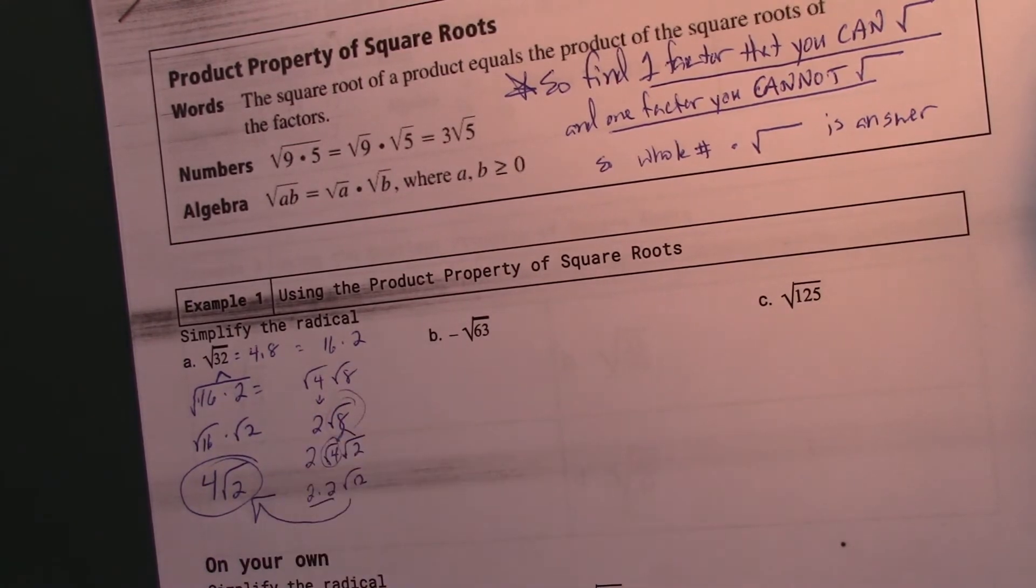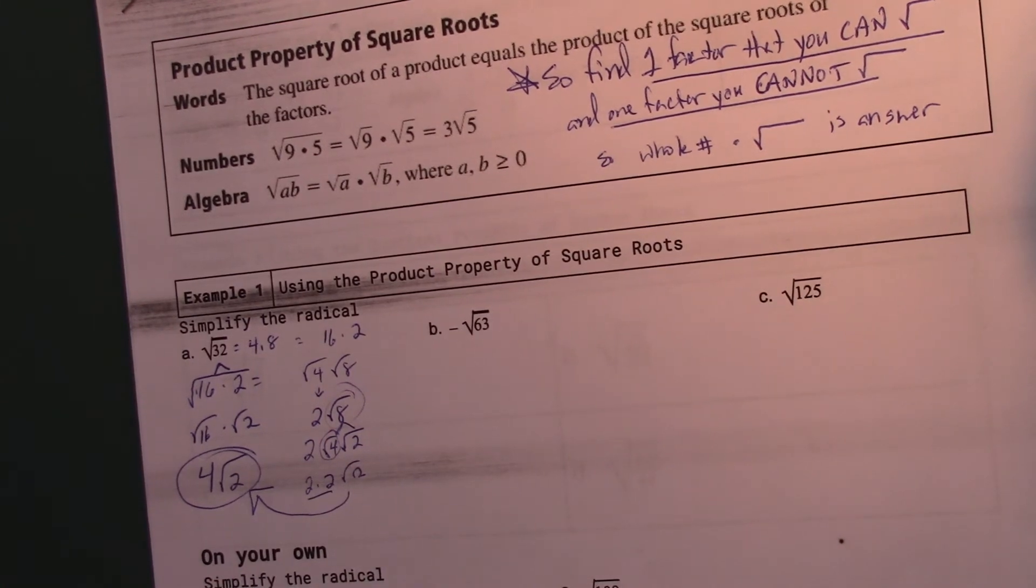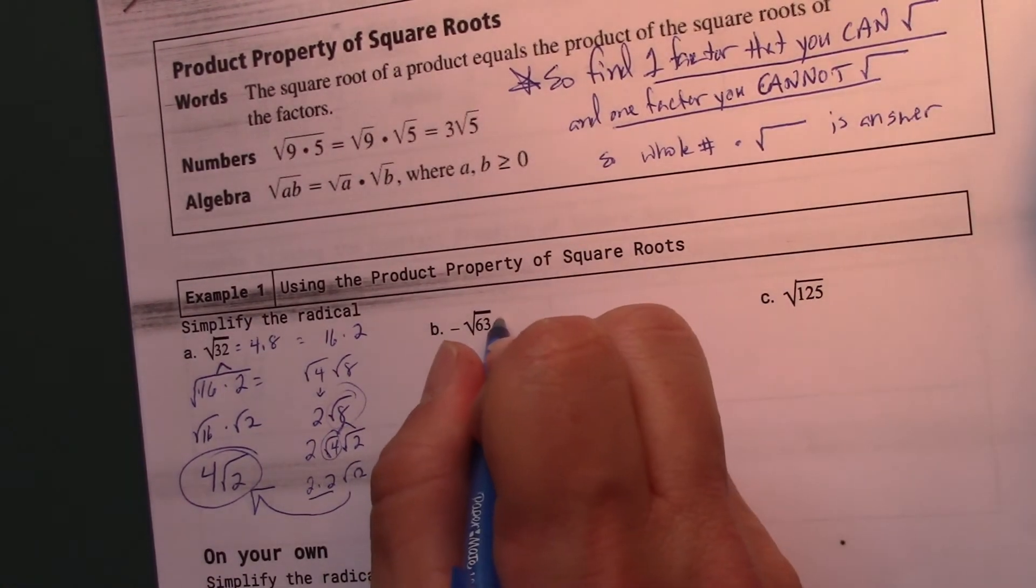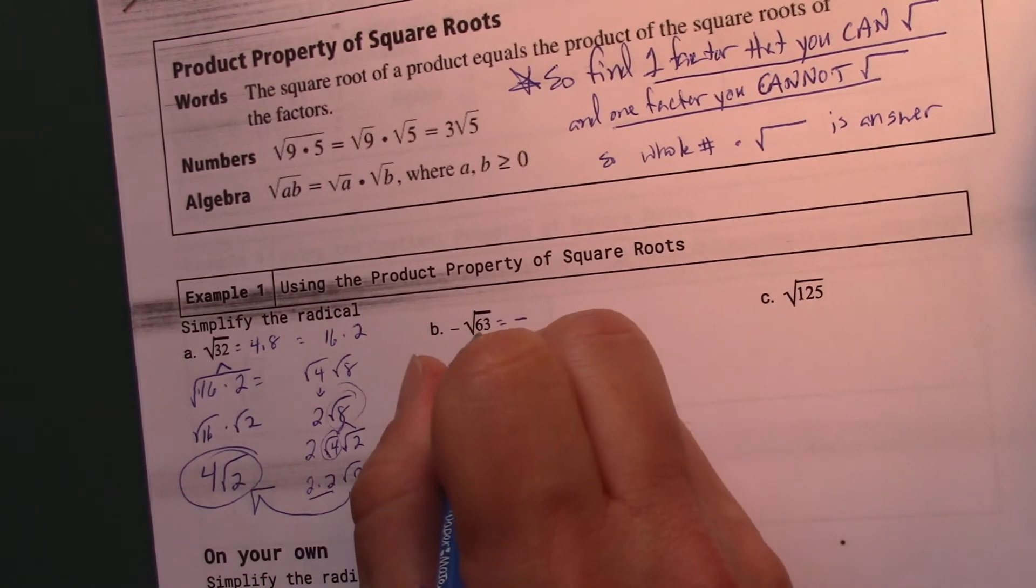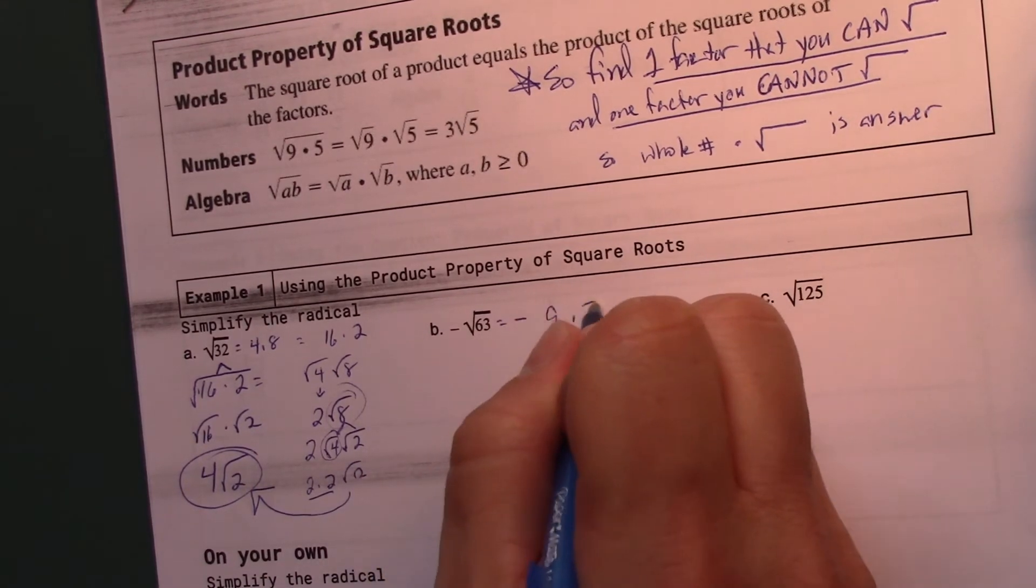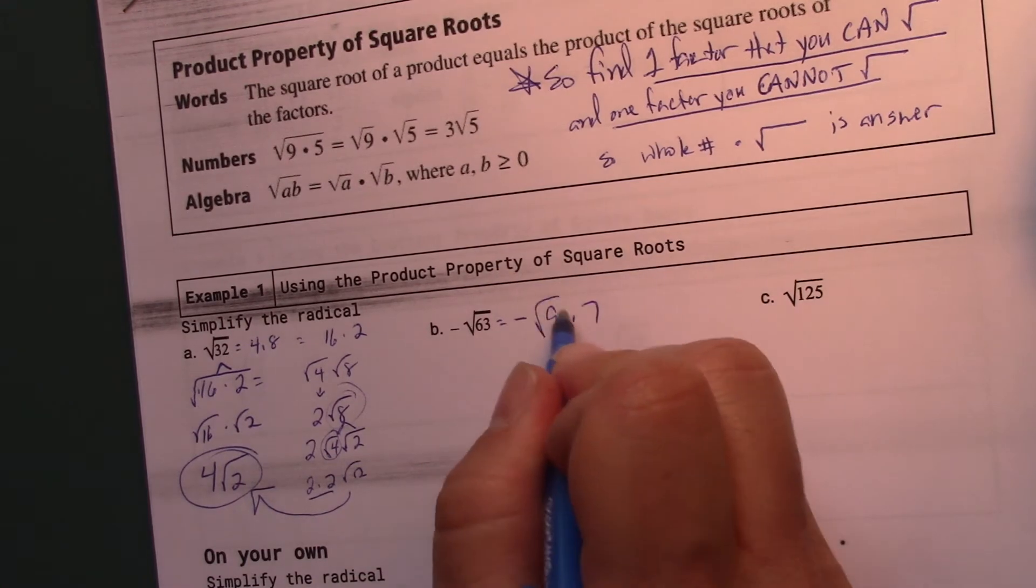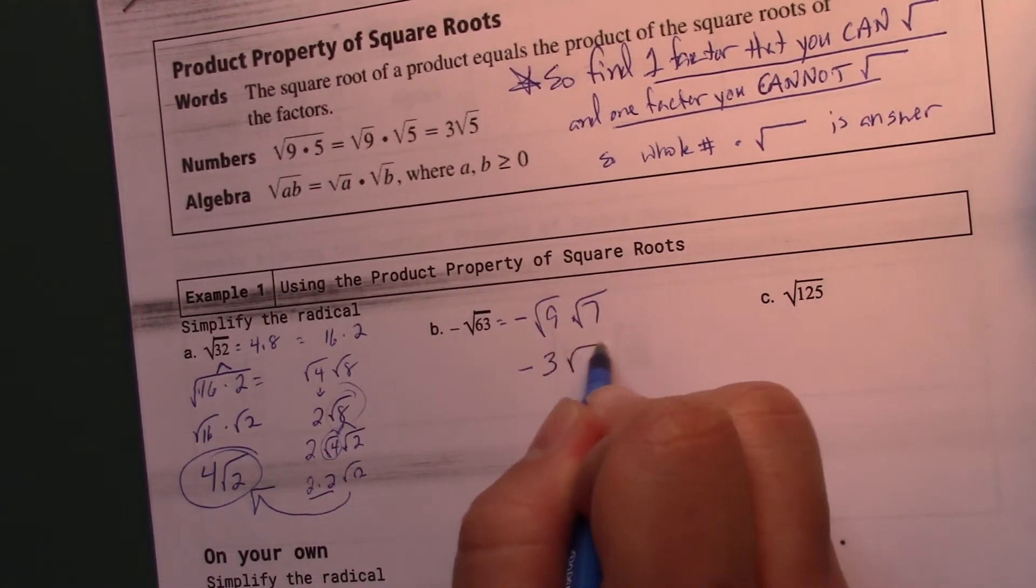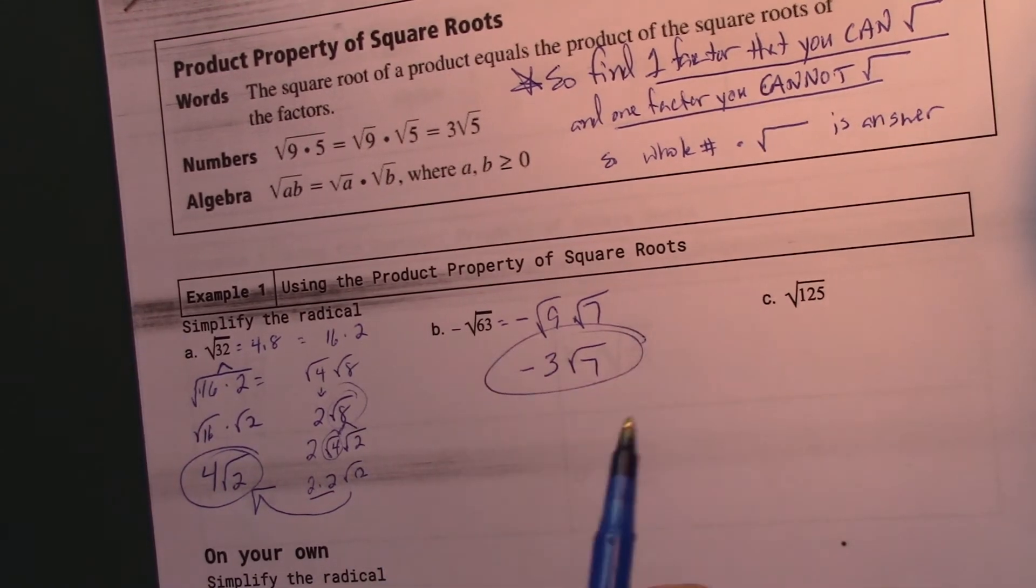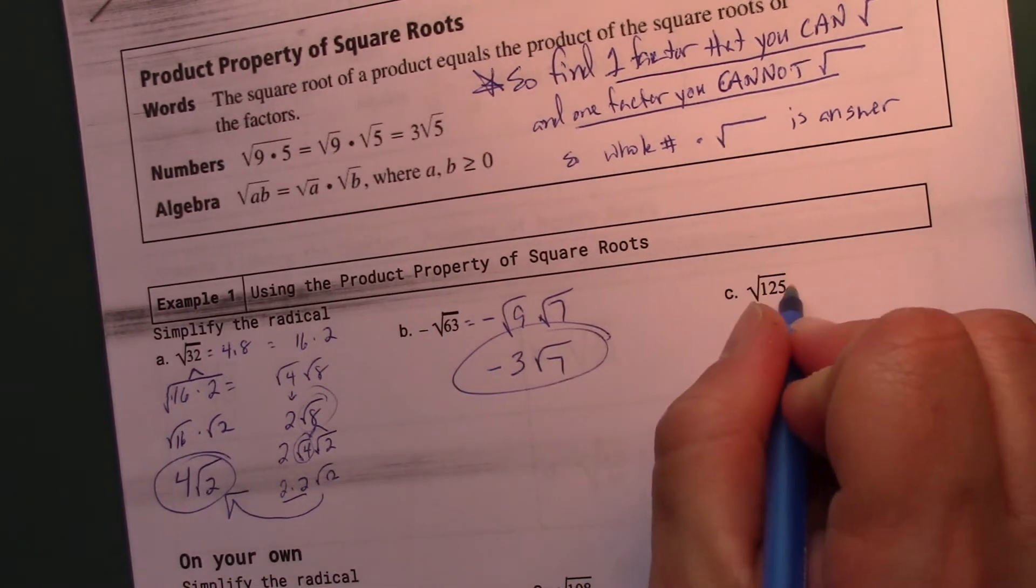If you don't you're going to have to keep going. And 8, ladies and gentlemen, shows up a lot. Next problem. Negative square root of 63 is 9 times 7. And that actually works out really nice because the square root of 9 is 3. Square root of 7 I can't do. That's it. Something I can square root I pull out. Something I can't.